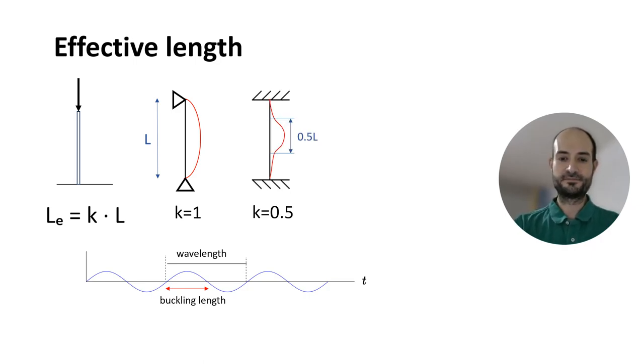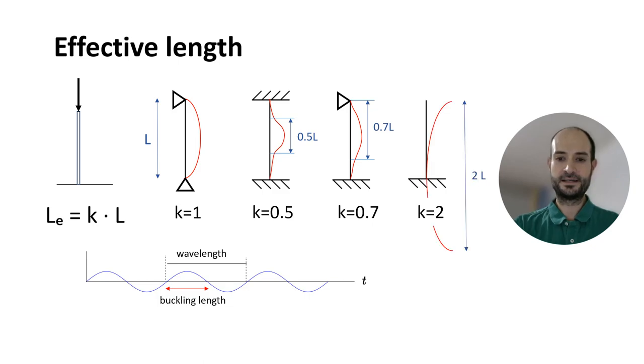If we have fix-fix, it's 0.5, 0.7 for fix-pin, and then for fix-free we have 2.